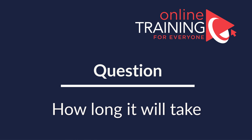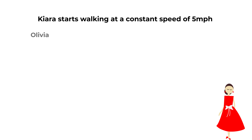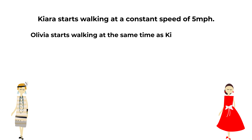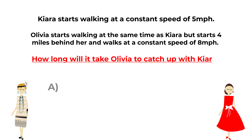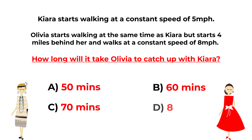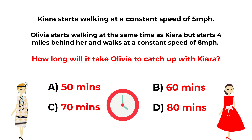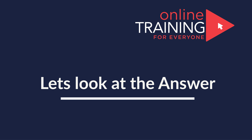Here's an interesting question we frequently see on the test. Kiara walks at a constant speed of 5 miles per hour. Olivia starts walking at the same time but starts 4 miles behind her and walks at 8 miles per hour. How long will it take for Olivia to catch up with Kiara? Choices: A) 50 minutes, B) 60 minutes, C) 70 minutes, D) 80 minutes.